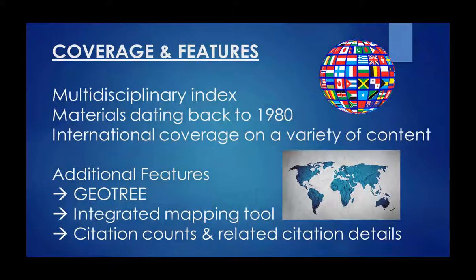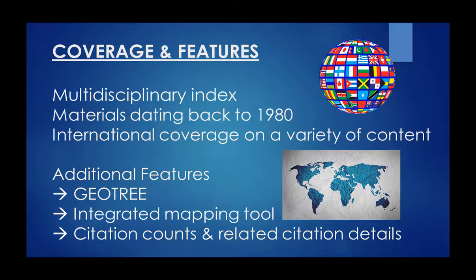Geobase consists of a multidisciplinary index covering up-to-date research literature on the earth sciences, ecology, geology, human and physical geography, environmental sciences, and geomechanics. The content within this online database covers materials from the year 1980 to the present, including international coverage on peer-reviewed journals, conference papers, monograph chapters, and trade publications. By using the GeoTree index, a standardized classification and reference tool, Geobase is able to provide consistent and accurate search results for all levels of geoscientists.